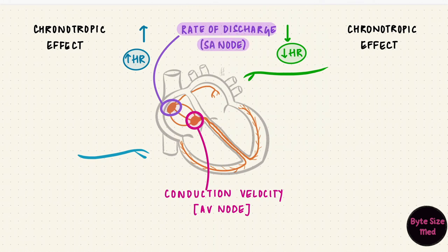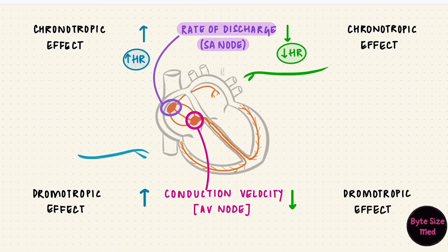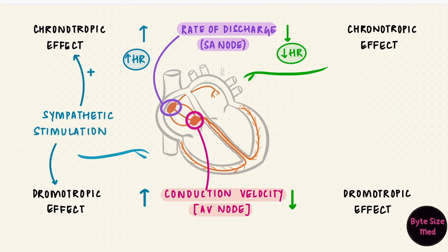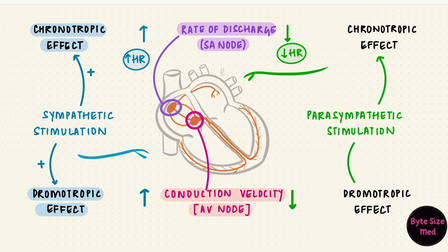Conduction through the AV node is essentially conduction between the atria and the ventricles. If that conduction velocity increases, there is faster conduction from atria to ventricles; if it decreases, conduction is slower. The change in conduction velocity is called a dromotropic effect. Sympathetic stimulation increases both — it has a positive chronotropic and a positive dromotropic effect — while parasympathetic stimulation does the opposite, with a negative chronotropic and a negative dromotropic effect.